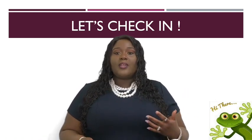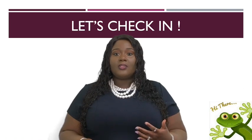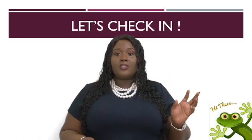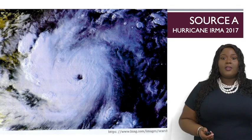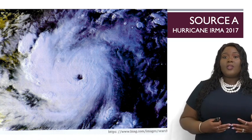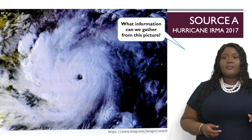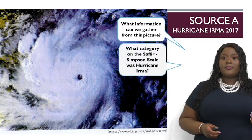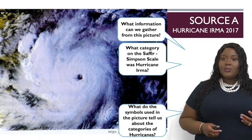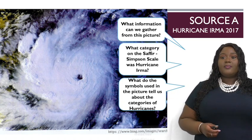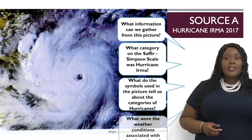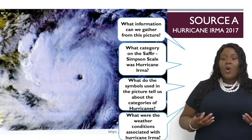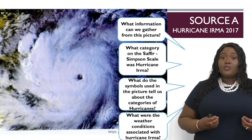At this point you should be able to explain question one fully on your own. Let's now analyze two sources within the coursework. Source 8 is about Hurricane Irma in 2017. Ask yourself: What information can we gather from this picture? Which category on the Saffir-Simpson scale was Hurricane Irma? What does the symbol used in this picture tell us about the category? What were the weather conditions associated with Hurricane Irma? Answering these will give you a rich, detailed description of hurricanes.